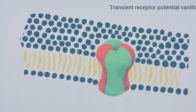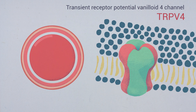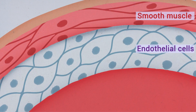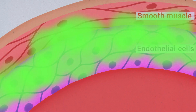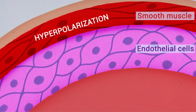The transient receptor potential vanilloid 4 channel, or TRPV4, is an ion channel whose activation is implicated in endothelium-dependent vasorelaxation. Indeed, its activation promotes vasodilation through the increase of intracellular calcium, nitric oxide release, and subsequent smooth muscle cell hyperpolarization.